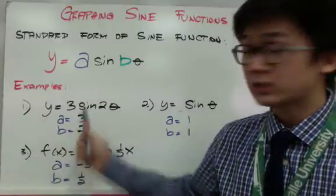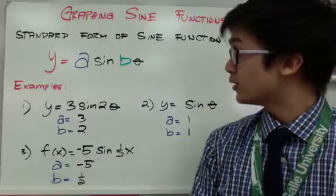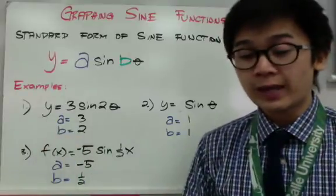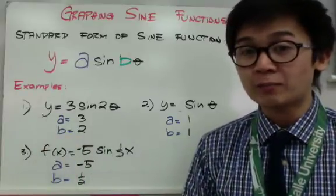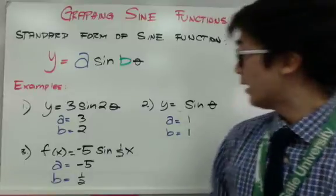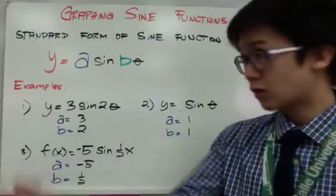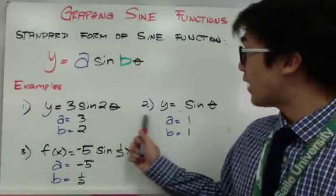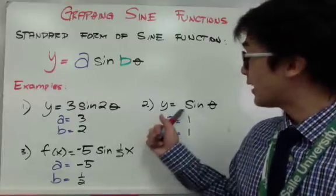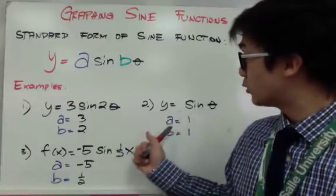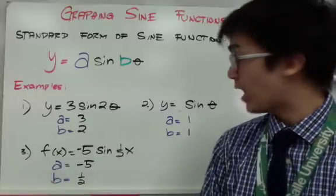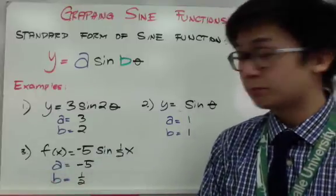For example, y equals 3 sine 2 theta gives us a equals 3 and b equals 2. You need to identify the values of a and b to graph the trig function — and this is true for sine, cosine, and tangent. For y equals sine theta, a and b are both 1. For f(x) equals negative 5 sine one-half x, a is negative 5 and b is one-half.